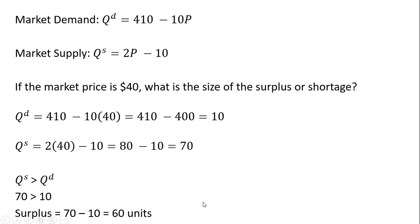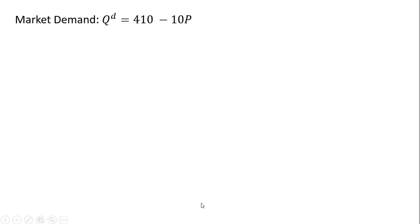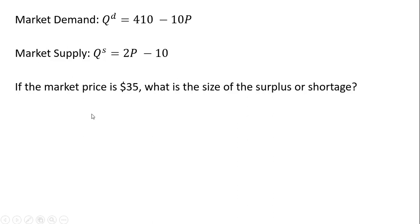And our last example. This time let's try a market price of $35. At $35 consumers want to buy 60 units. Sellers want to sell 60 units.